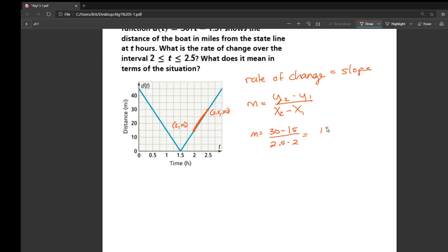So 30 minus 15 is 15, and 2.5 minus 2 is 0.5. Now remember, if you divide by a number less than 1, it's actually going to make this come out bigger. So our average rate of change here is actually 30. Don't freak out about the number becoming bigger here.